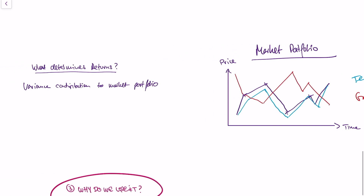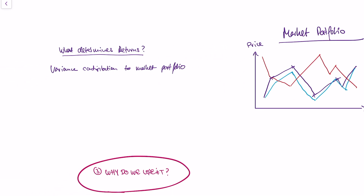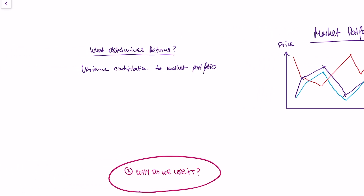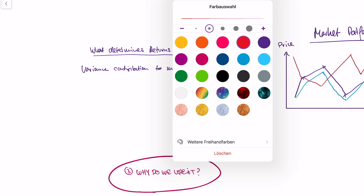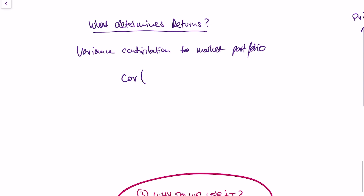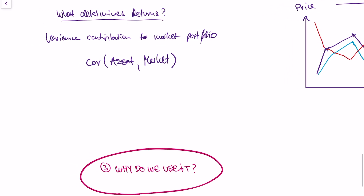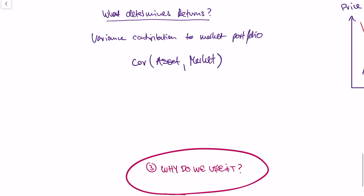What does this mean for the individual returns of Tesla and gold? Since everybody holds the market portfolio, they only care about how much risk the individual stocks contribute to it. Tesla contributes a lot to the market portfolio's risk, and gold contributes negatively. To measure how much an individual stock contributes to the market portfolio, we use the covariance of the asset and the market portfolio.